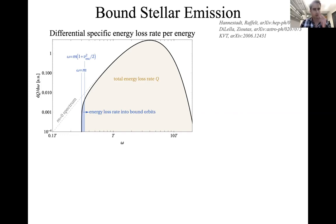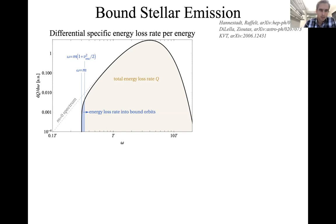If the axion has mass, the differential energy loss rate per unit volume rises with energy from phase space, then falls with Boltzmann suppression above the stellar temperature. The massless case is the dashed line; a small non-zero mass gives the black line. A small fraction — the blue sliver — is emitted into bound orbits. The escape velocity at the core of the sun is a few times 10⁻³, so the fraction emitted into bound orbits is of order v_escape cubed or less — an extremely small instantaneous fraction.